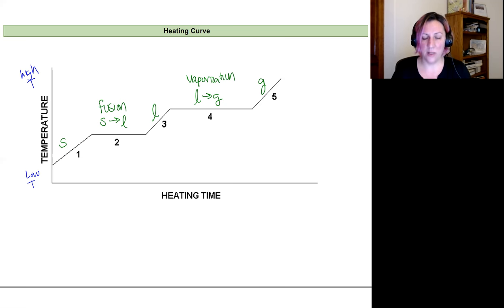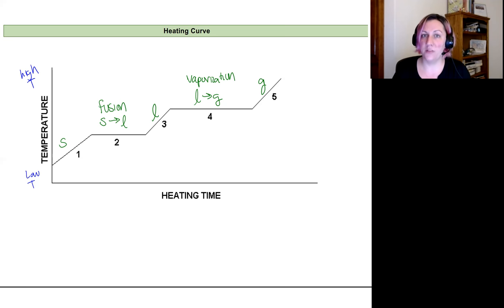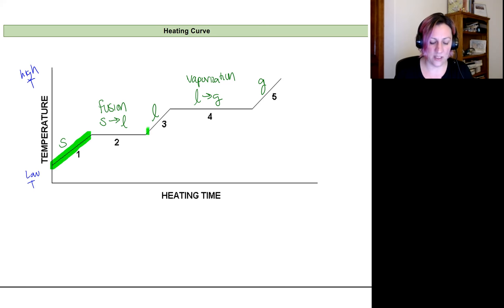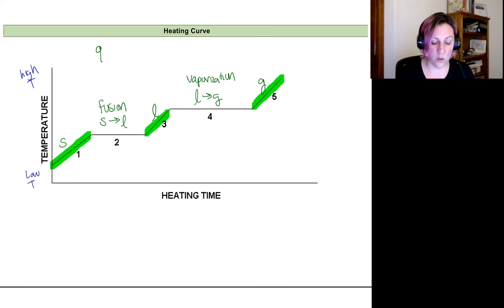If we want to calculate the amount of energy we'd have to input into a system to achieve a certain temperature change that includes phase changes, we have to break that calculation into each of the different segments of the heating curve — one, two, three, four, five. For segments where the temperature is increasing (just a solid, just a liquid, or just a gas) we use the equation q = mass × specific heat × ΔT.